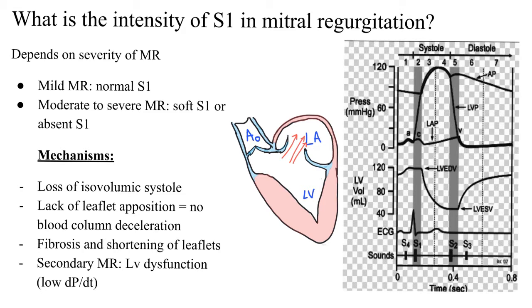When there is LV dysfunction, the LV is weak — it does not have a strong ejection fraction and its contractility is depressed. As a result, it is not going to have a very high rate of dP/dt. As seen in a previous video, the rate of rise of pressure in the left ventricle is decreased in LV dysfunction. This leads to a decreased pressure crossover point from LV to LA at the onset of systole, and therefore a decreased intensity of the first heart sound.